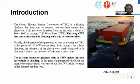Introduction: The ocean thermal energy conversion or OTEC is a floating platform that functions to convert seawater heat energy into electricity. Cold water is taken from the sea with depth of 800 to 1000 meters through cold water pipe or CWP. This long CWP size causes unavoidable bending load due to seawater flow.